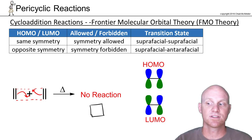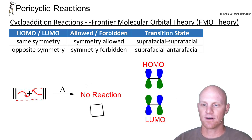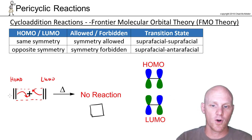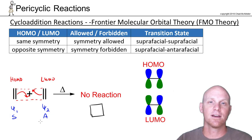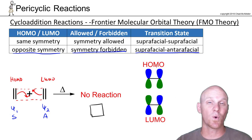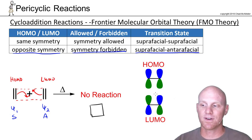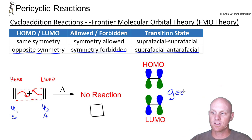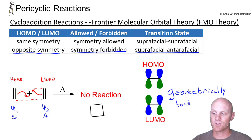Conservation of orbital symmetry explains why no reaction occurs. We want the HOMO of one reactant interacting with the LUMO of the other. Since they're two identical molecules, just pick one. The HOMO would be ψ1 and is symmetric, whereas the LUMO is ψ2 and is antisymmetric. They have opposite symmetry, so it's a symmetry-forbidden reaction and would require a suprafacial-antarafacial interaction. To achieve that, you'd need to kink one of the molecules, but it turns out these are both too small for that to occur, so we also say this is geometrically forbidden.